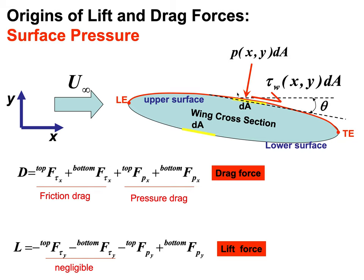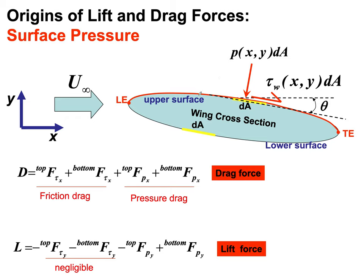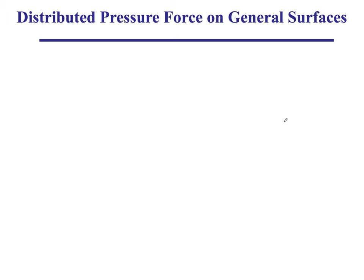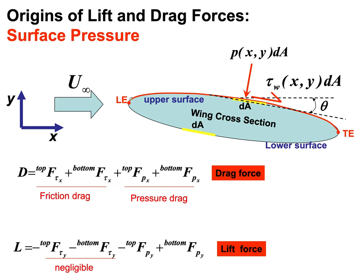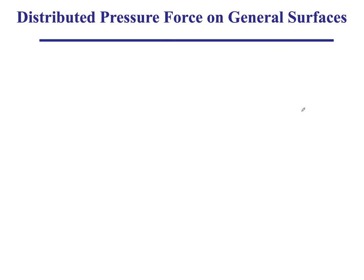The way you measure static pressure over the surface of an object such as a wing is with static pressure ports — little tiny holes with tubes going through the wing into a pressure transducer. That distributed pressure contributes, as we said, to the drag and lift forces. So if we know the shape of the wing and the pressure distribution, what are the important quantities we need to look for?